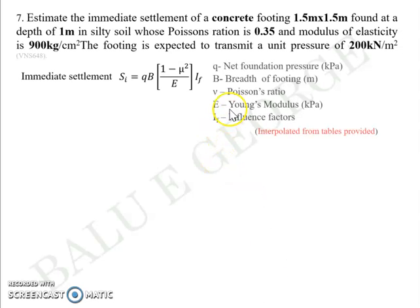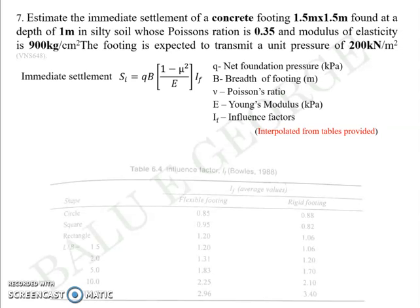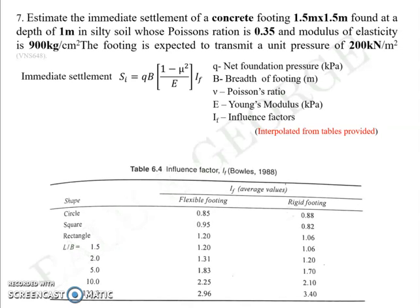And IF is an influence factor that you have to interpolate from the tables. Excuse me for the mistake that I have made in this mu and this mu. There is a difference, but nonetheless, they are all Poisson's ratios. Now IF, the influence factor, like we mentioned in theory, can be interpolated from the table, a sample of which is given here.